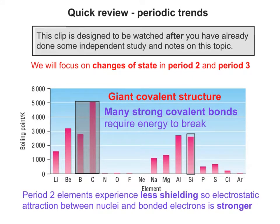The period 2 elements experience less shielding, so the electrostatic attraction between nuclei and bonded electrons is stronger. Here we're talking about boron and carbon as opposed to silicon.